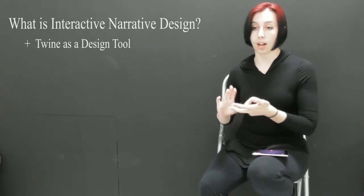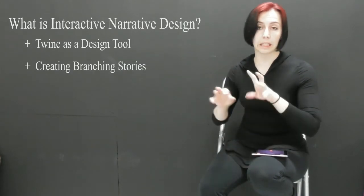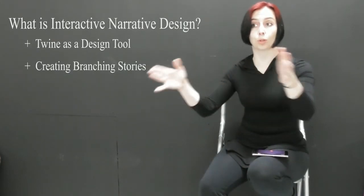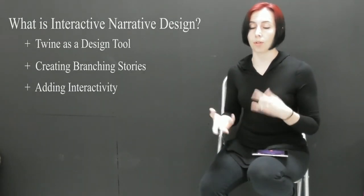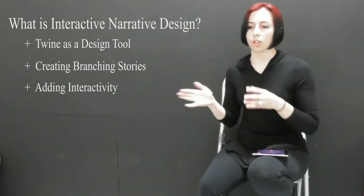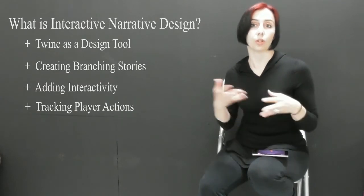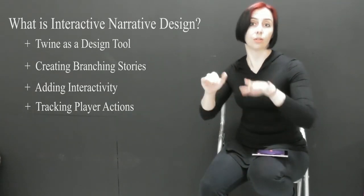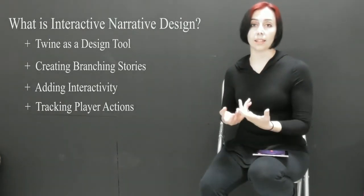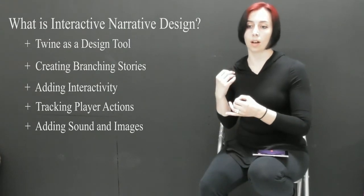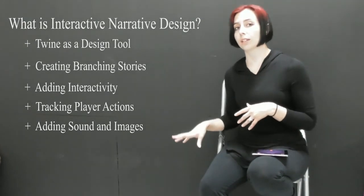We'll talk about just installing Twine in the first place. We'll talk about building your very first stories and creating links between branching story possibilities. We'll talk about building in interactivity — how you can allow the player or user to change the flow of the story. We'll talk about how to keep track of what a player does and the choices they make, and how to allow that to change the story as the player progresses through. We'll also talk about adding sound and images, which is particularly important if you're doing this for the purposes of storyboarding in interactive narrative.